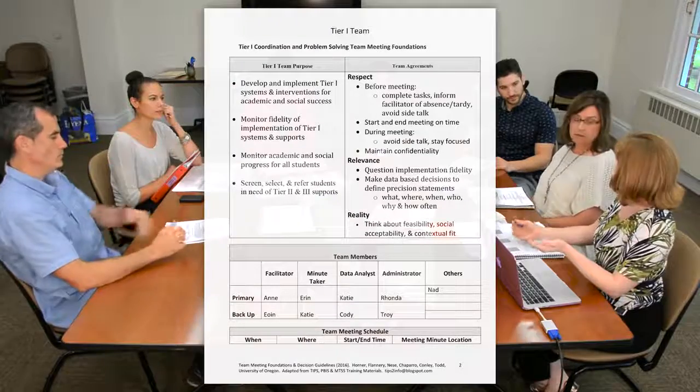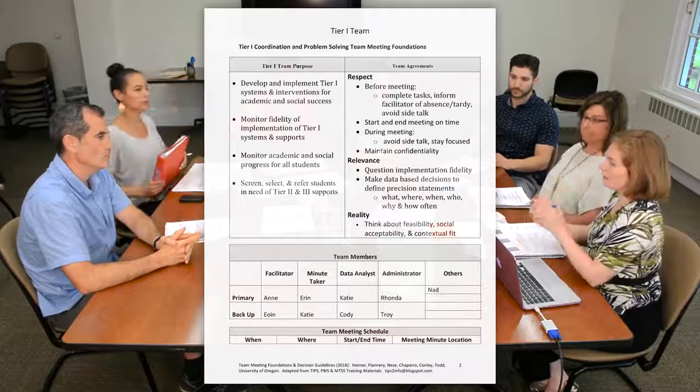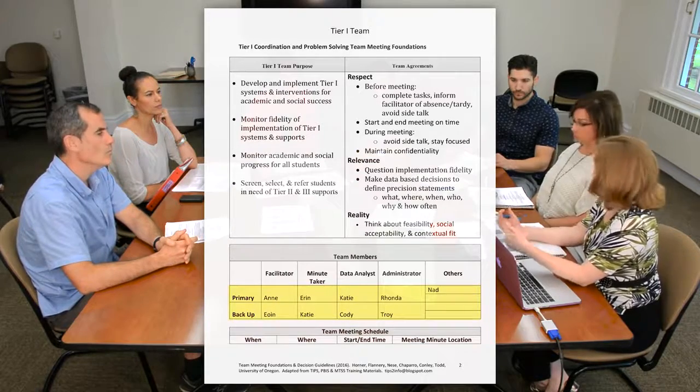So Katie, how about you go over that with us? We try to keep everything posted so that we can refer back to it. We have our team agreements: respectful, relevance, and reality. We also have different roles on our team, and we make sure that each role has a primary and a backup, just in case. We always start with the previous meeting minutes, and then as we meet, Erin revises and adjusts those, and the next day she'll send those out. We always make sure that within the first five minutes we are looking at data to make sure that drives the rest of our meeting. We also occasionally need to take our agenda items and rearrange a little bit, if Rhonda needs to step out or has a schedule change.